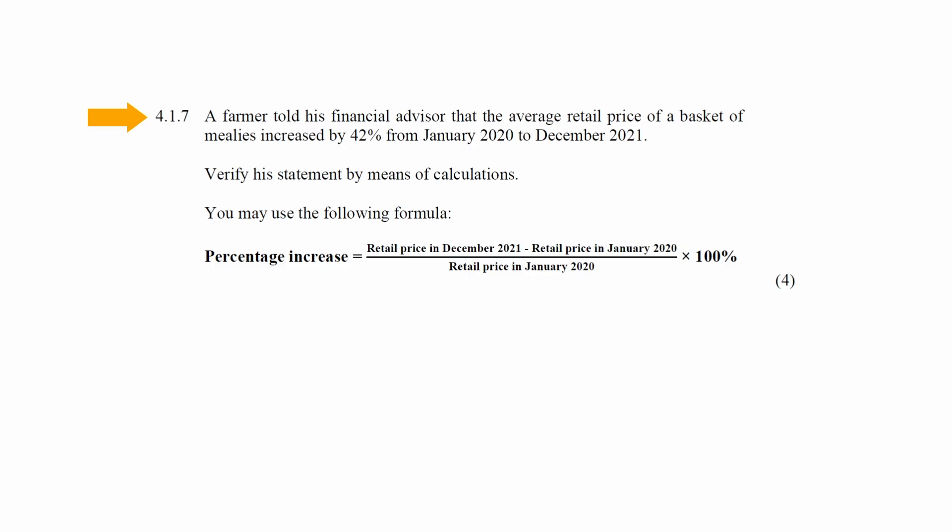In question 4.1.7, a farmer told his financial advisor that the average retail price of a basket of mealies increased by 42% from January 2020 to December 2021. You will have to verify his statement by calculation using the formula: percentage increase equals the retail price in December 2021 minus the retail price in January 2020, divided by the retail price in January 2020, multiplied by 100%.